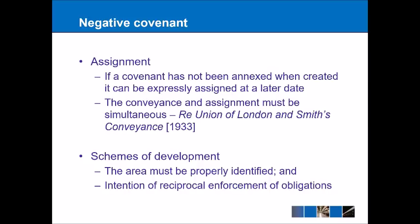Finally, we have schemes of development — this is where you might sell off a plot of land in order to build a lot of houses, such as a housing estate. In these circumstances, you effectively have a covenant or a benefit of a covenant that runs right across the housing estate. In order for that to occur, there are two criteria: the area must be properly identified, clearly delineating where the housing estate is, and there must be an intention of reciprocal enforcement of obligations — in the same way that maintaining a road on a housing estate benefits everyone.